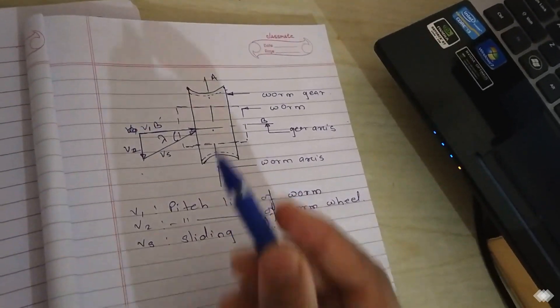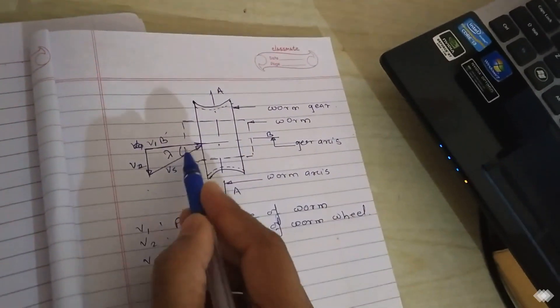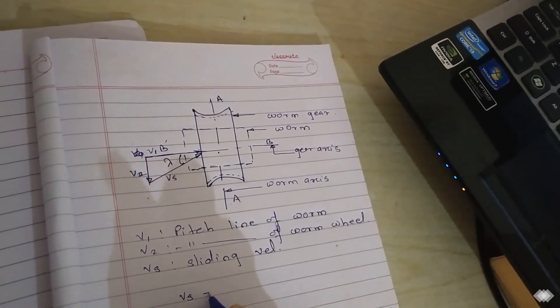Now as we can see, this sliding velocity makes an angle lambda. Lambda is nothing but the lead angle. So we got this triangle and we can calculate the sliding velocity in this way.